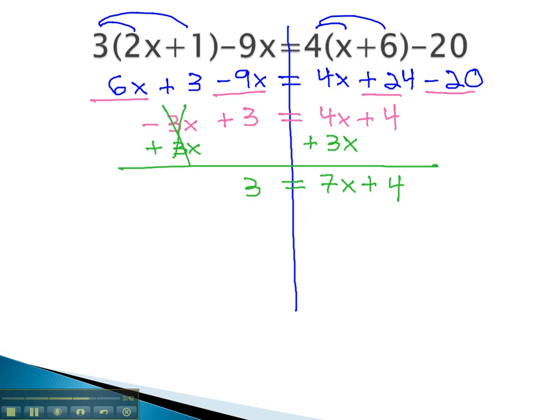We now have a basic two-step equation, which we can solve moving away from x by subtracting first, subtracting 4 from both sides, giving us negative 1 equals 7x, and then finally dividing both sides by 7 to get our final answer. x is equal to negative 1 seventh.